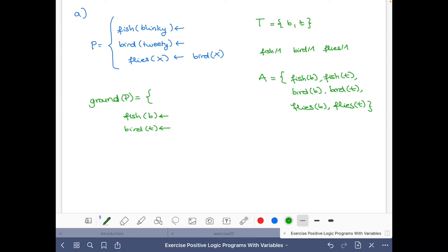So then if we replace the X by blinky, we get flies(blinky) if bird(blinky). And if we replace the X by tweety, we get flies(tweety) if bird(tweety). And that's it. This is the ground program.